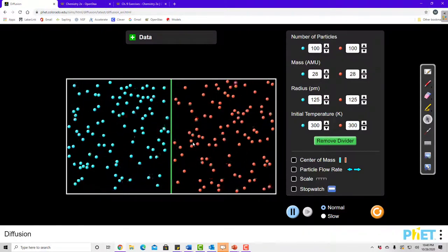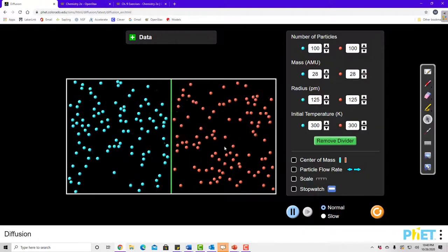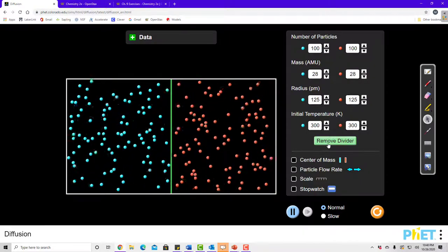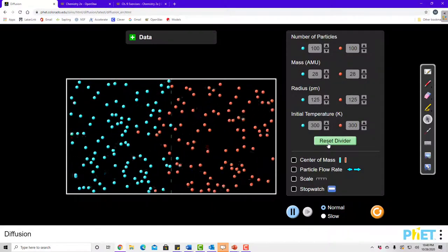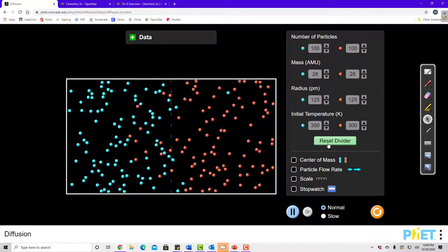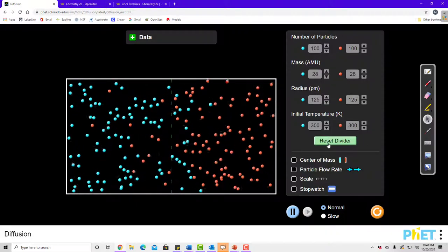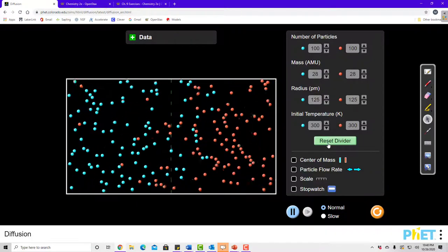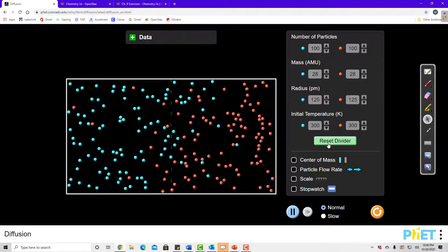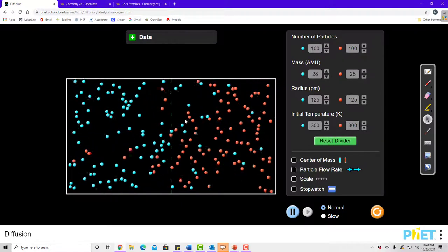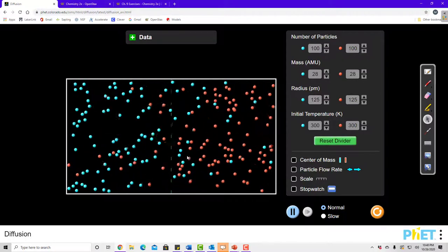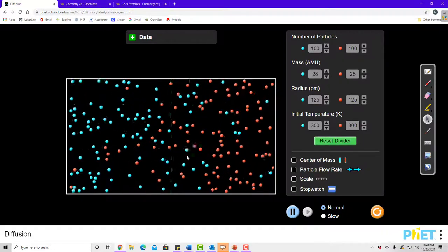So if I have two different gases that are separated by this partition like this, and I remove this divider, then you can see that slowly the blue ones will make their way over into the red, and the red ones will slowly make their way over into the blue. This process by which these two gases mix is called diffusion.